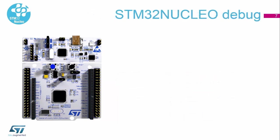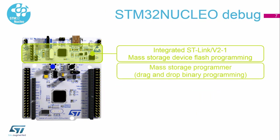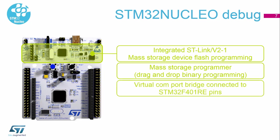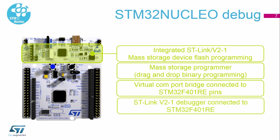On the top part of this board you can find the STLINK debugger, which can also work as a mass storage programmer — you drag and drop the binary into the mass storage drive that appears in your system and it will automatically program the STM32. There is also a virtual COM bridge between USB and UART directly connected to the STM32 F401. The main part is the debugger, which can be used for programming or debugging of your application. It runs over the SWD interface — not JTAG, but SWD.